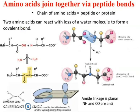Amino acids join together via peptide bonds. A chain of amino acids is equal to a peptide or protein. Two amino acids can react with the loss of a water molecule to form a covalent bond. The C-double-O group of the carboxyl terminal of one amino acid reacts with the amino group of another. Hydrogen from the amino group and OH from the carboxyl group are removed, making a carbon-nitrogen bond — this is known as a peptide bond.